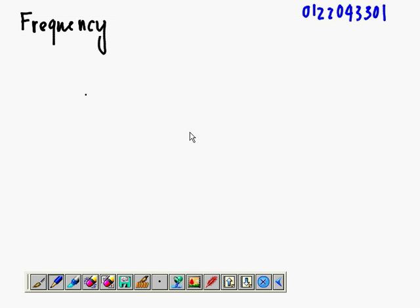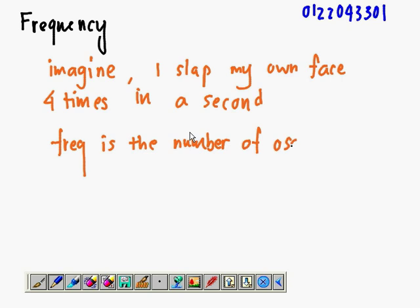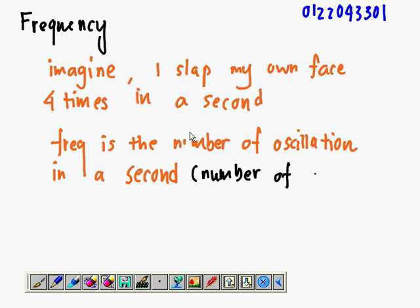Now, what is frequency? Imagine I slapped myself four times in a second - four slaps in a second. What does that mean? That's how frequent I slap myself within a certain period of time. Frequency is the number of oscillations in one second. For example, drummers can hit the drum six times in one second maybe. That's the number of oscillations, in a simple way to define it.